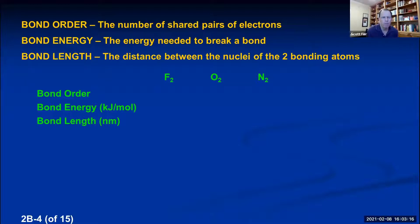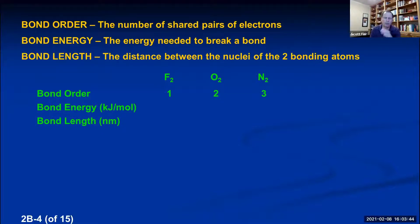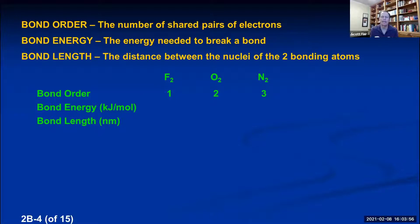For the three diatomic molecules: F2 shares one pair of electrons — bond order of one. O2 shares two pairs — bond order of two. N2 shares three pairs — bond order of three. What would you predict about bond energy if bond order increases from one to two to three? Which pair of atoms is held together more tightly and would take more energy to break?